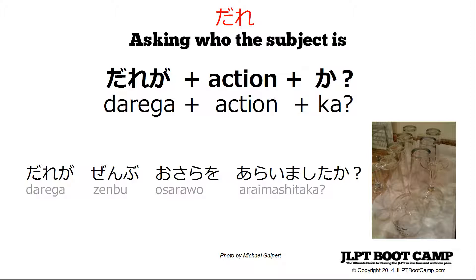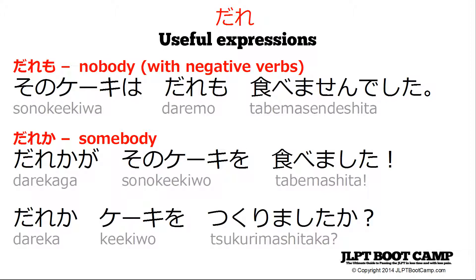With dare, there are some useful expressions. You can add the 'mo' particle and make 'nobody' with negative verbs. For example, 'sono keiki wa dare mo tabimaseん deshita' — nobody ate the cake. If you say 'dare' and add the 'mo' particle with negative verbs, this means nobody. If you want to talk about somebody, you add 'ka': 'dare ka.' For example, 'dare ka ga sono keiki wo tabimashita' — somebody ate the cake.